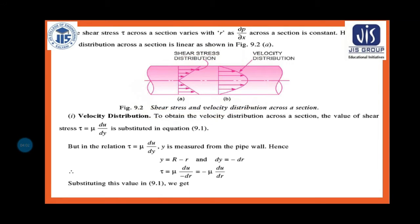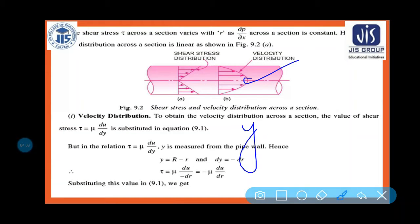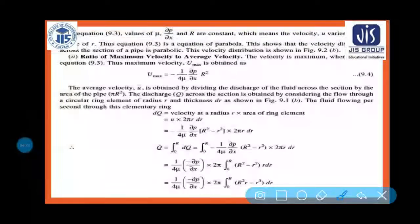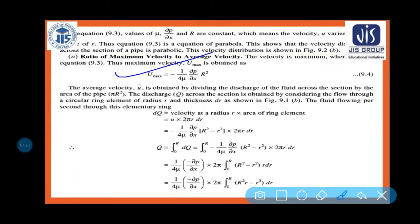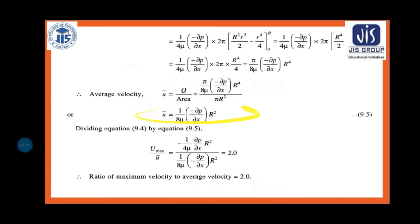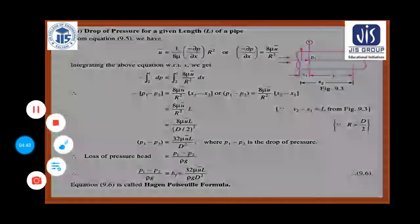The velocity distribution and shear stress distribution diagram - the velocity profile is a parabola because it satisfies the parabola formula y² = 4ax. Maximum velocity u_max = -1/(4μ) · (dP/dx) · R². Discharge and average velocity can be found from the formulas, and the ratio u_max/u̅ = 2.